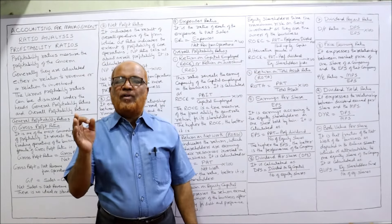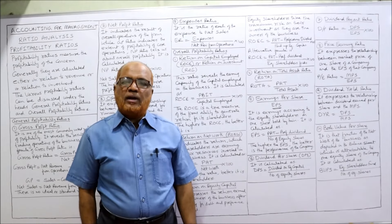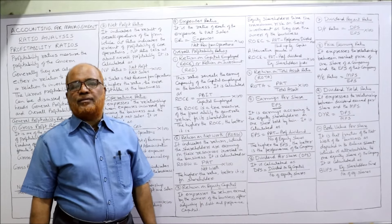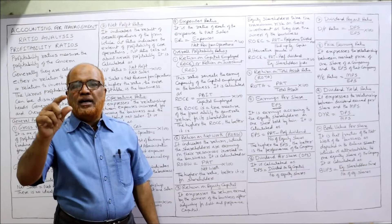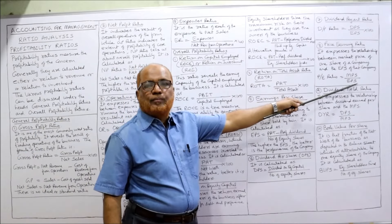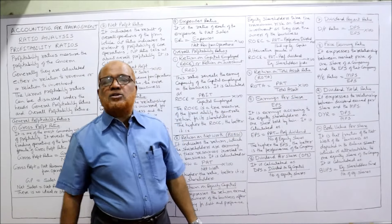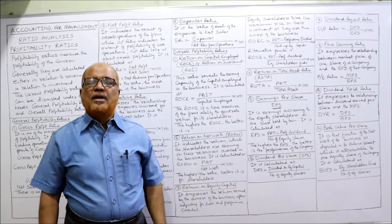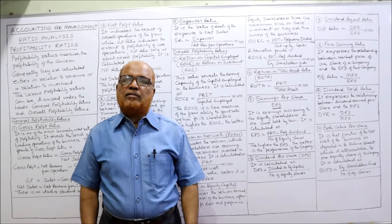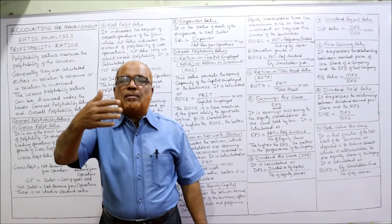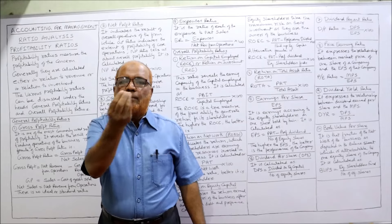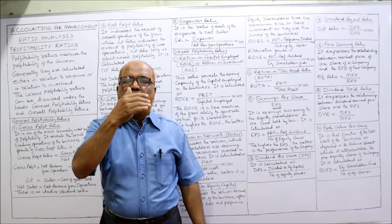Price earning ratio is a very important and frequently asked ratio. The formula is: MPS (market price per share) divided by EPS (earnings per share). This gives a result in times — do not multiply by 100. For example, if EPS is 10 rupees and market price per share is 100 rupees, the price earning ratio is 100 divided by 10, which equals 10 times.